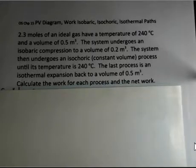This video will show a calculation of work on a pressure volume diagram where the system is an ideal gas, 2.3 moles, starting at a temperature of 240 degrees Celsius and a volume of 0.5 cubic meters. It's going to be compressed at constant pressure, that's isobaric, down to a volume of 0.2 cubic meters.